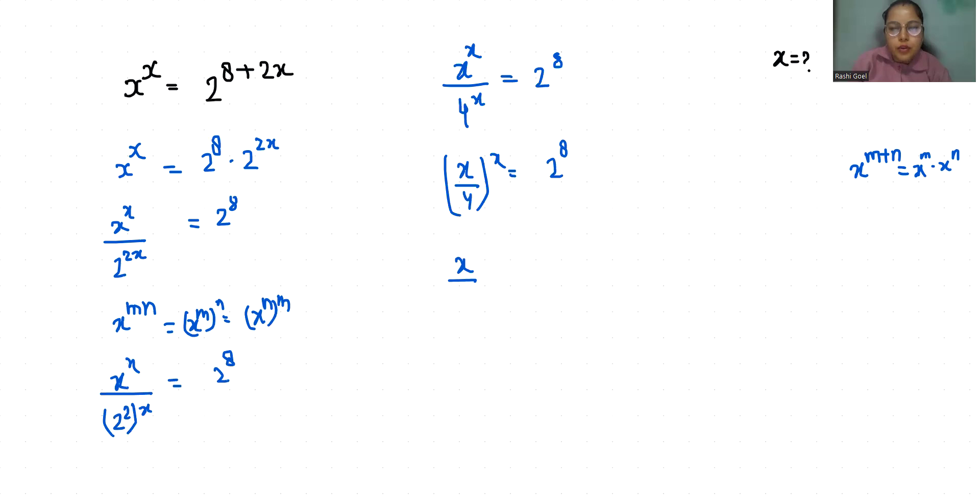Now I am going to divide with power 4 both sides. So x by 4 whole power x by 4 equals 2 power 4, sorry, 2 power 2.